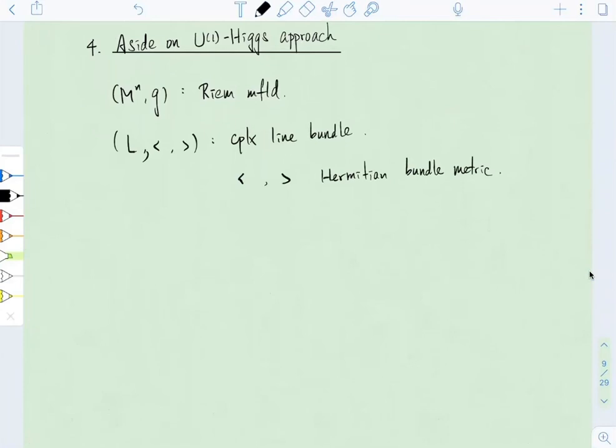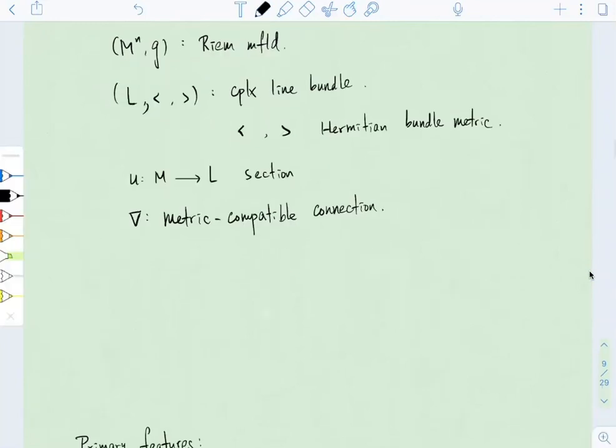Then the functional takes a section of L and a metric compatible connection on L as variables. So it takes one more variable than the Ginsburg-Landau function. And it has the following form, so I'll call it G-sub-epsilon. This is not standard notation. It's just because E is already used, and I don't want to use F. And this seems to be the next best choice. You don't have to agree with me on that.